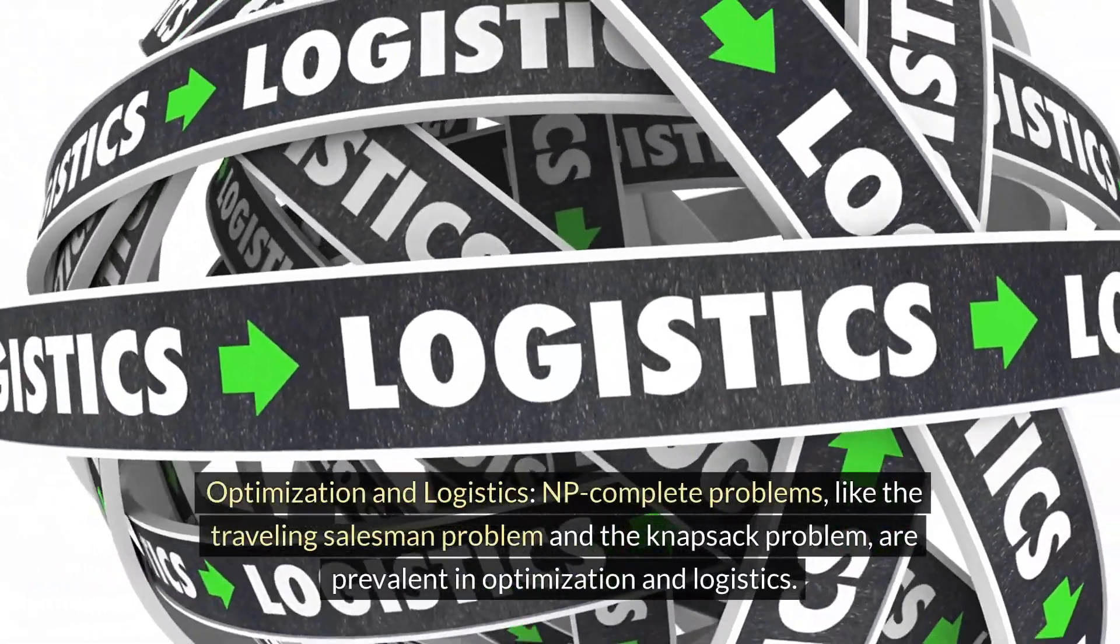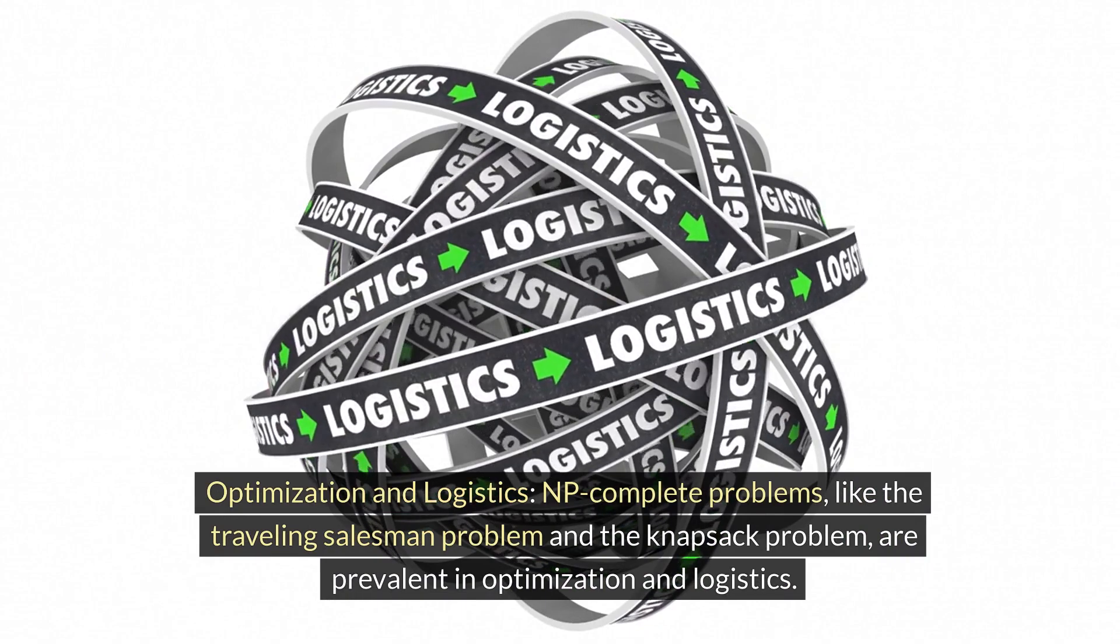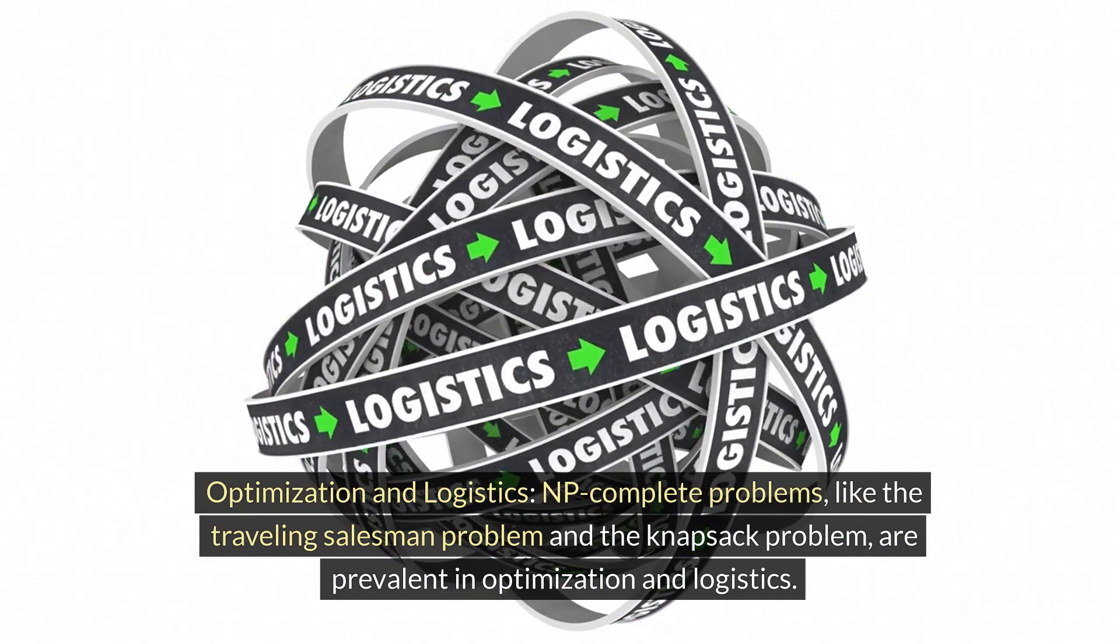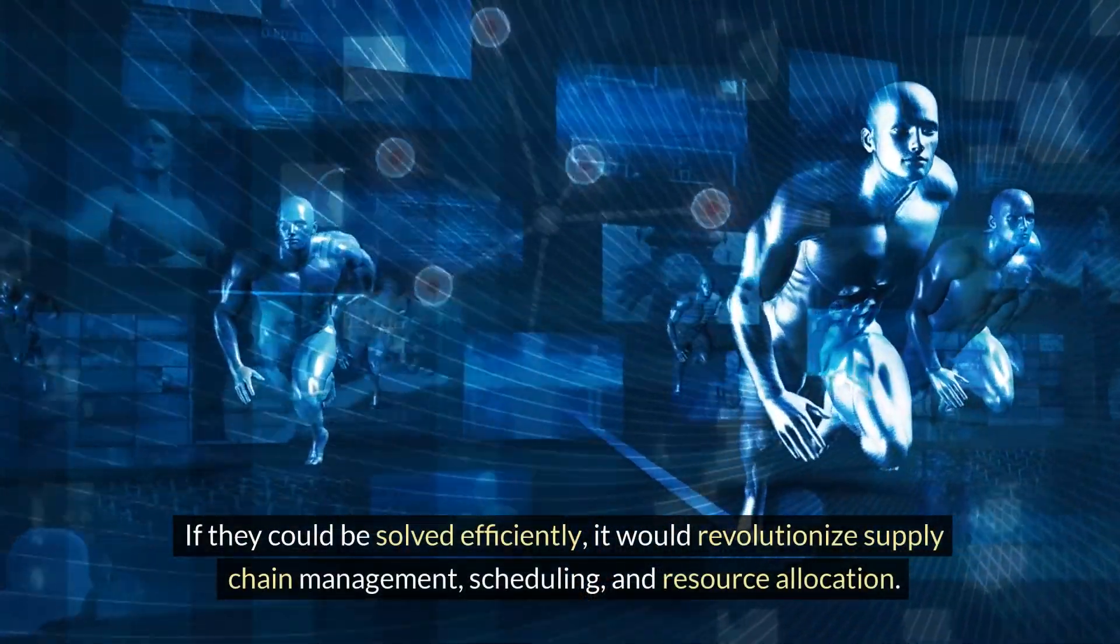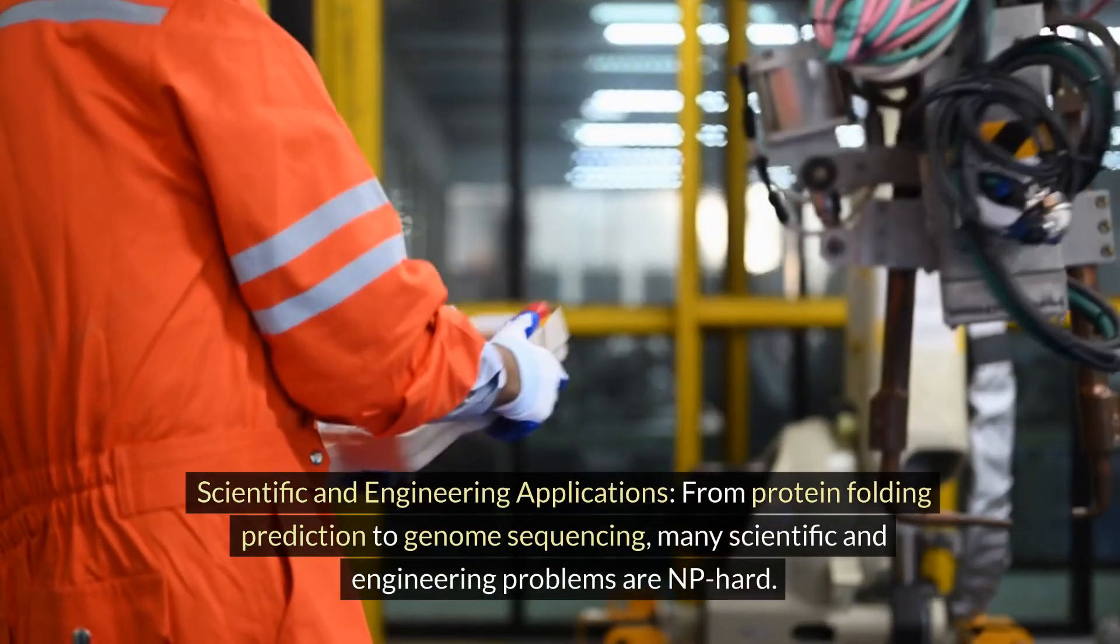Optimization and logistics: NP-complete problems like the traveling salesman problem and the knapsack problem are prevalent in optimization and logistics. If they could be solved efficiently, it would revolutionize supply chain management, scheduling, and resource allocation.